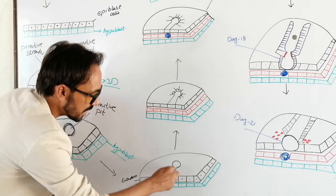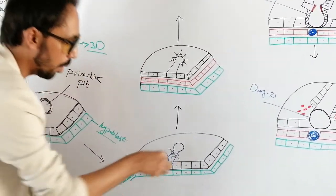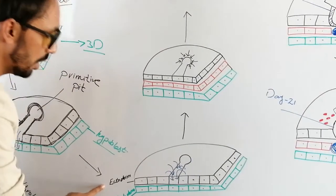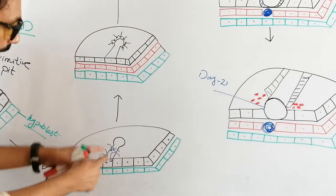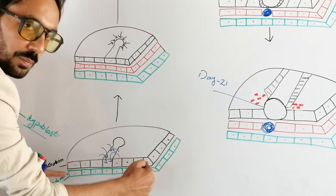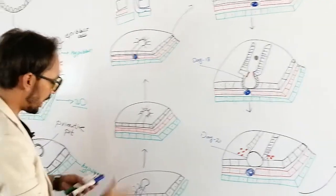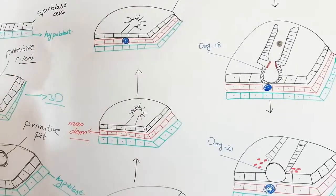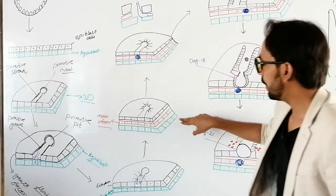The ectodermal cells will move through the primitive groove, go down, move laterally and posteriorly, and this phenomenon will make another layer called the mesoderm. We have now converted the bilaminar layer into a trilaminar layer with three germinal layers.